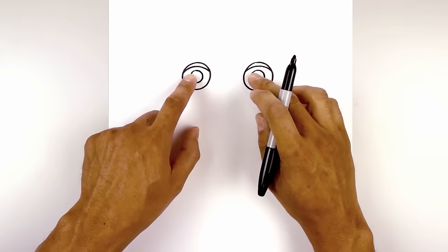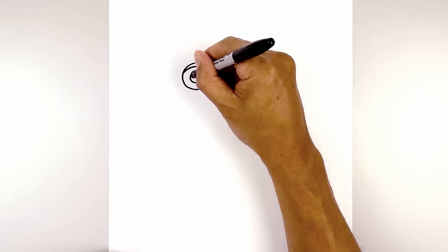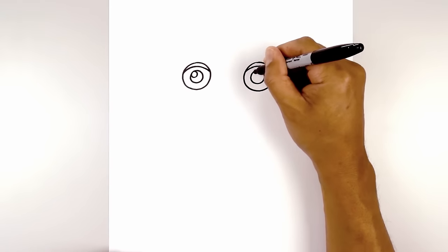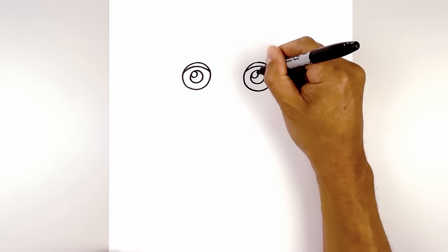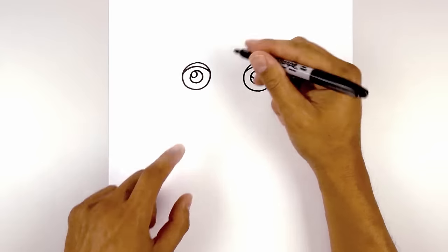On the top left of each pupil we draw a smaller circle for the highlight, and then we'll fill the pupils in black.